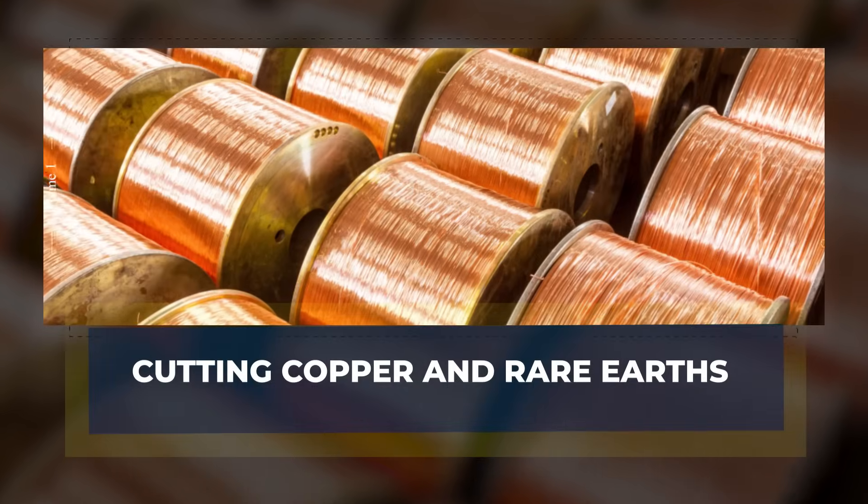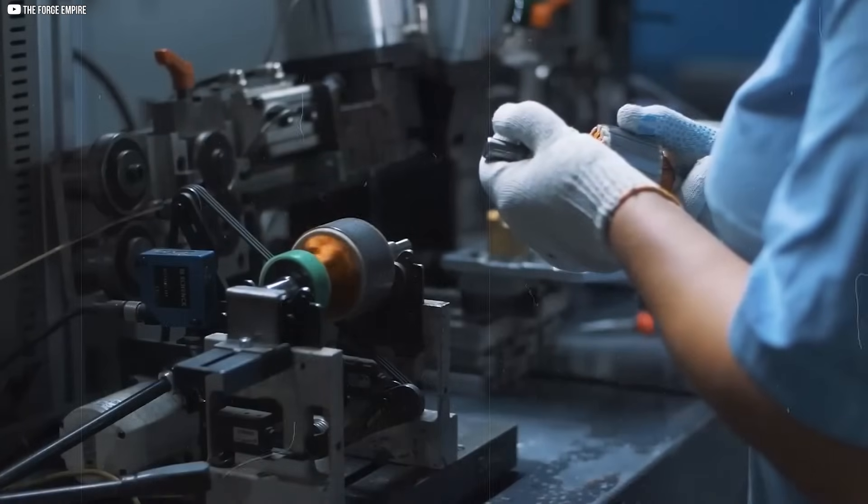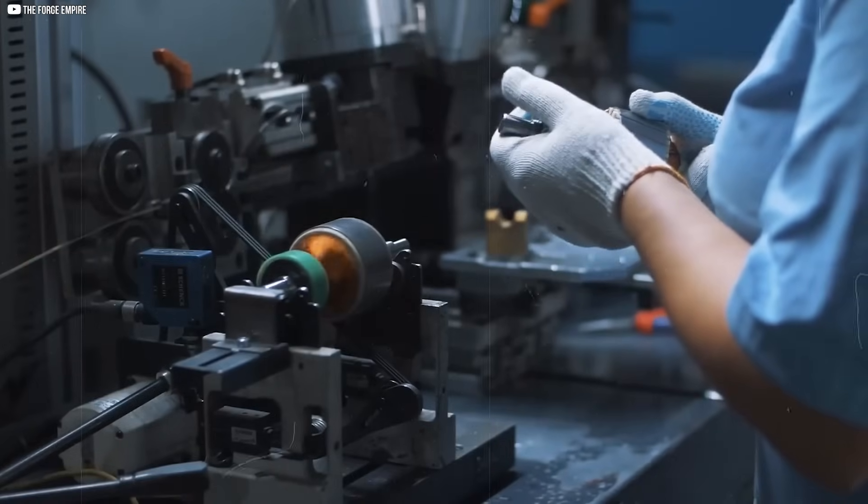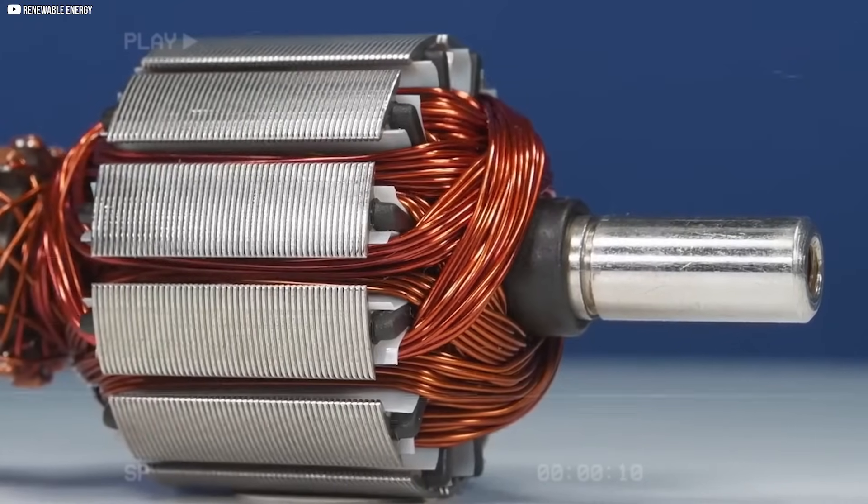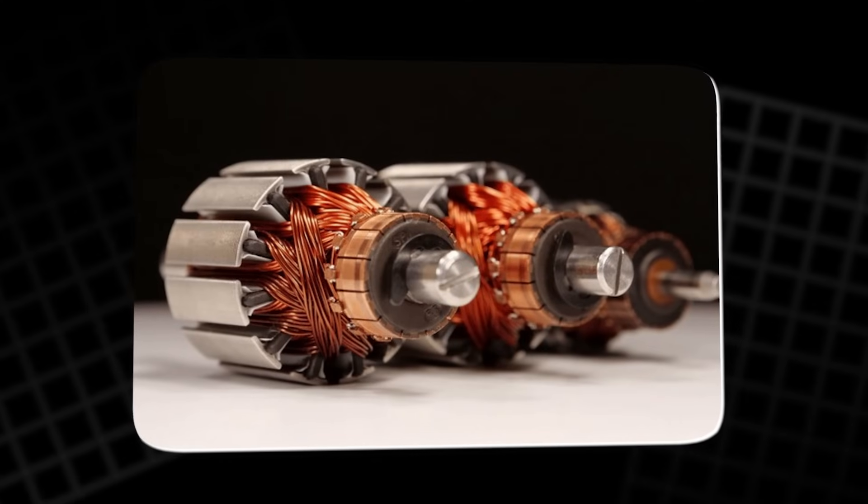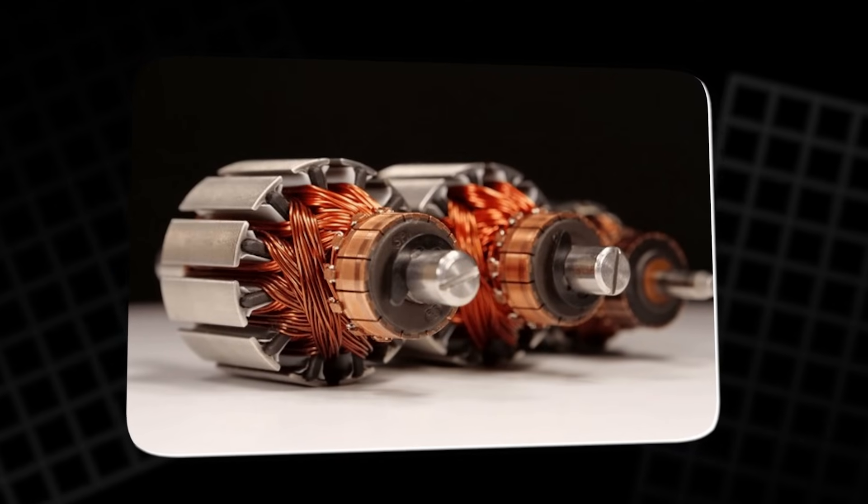Cutting copper and rare earths. One of the biggest costs in building motors comes from the metals inside them. Copper is needed in large amounts for windings, and permanent magnets depend on rare earth elements. Both are expensive and carry environmental and political risks.